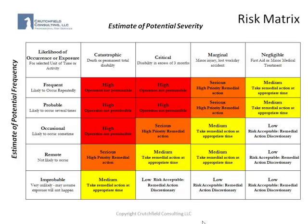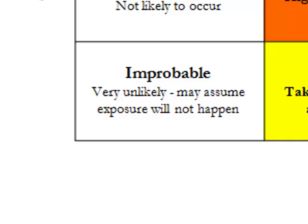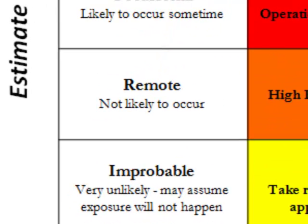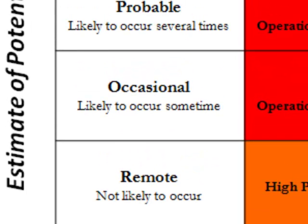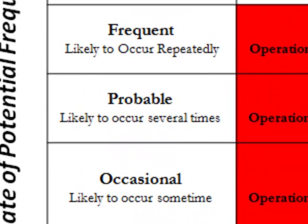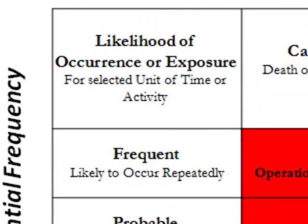If you'll note on the left column, we have the likelihood of occurrence or exposure, and the estimate of potential frequency. This ranges from the bottom left corner of improbable, very unlikely, to remote, not likely to occur, occasional, likely to occur at some time, probable, likely to occur several times, to frequent, which is likely to occur repeatedly.